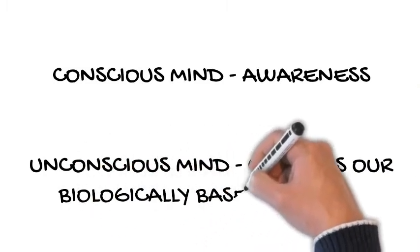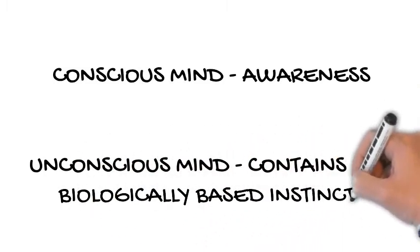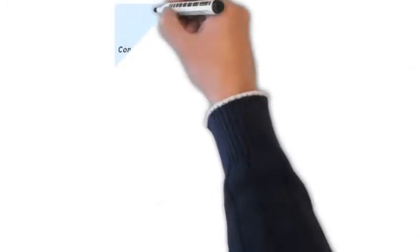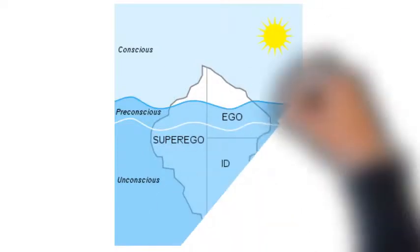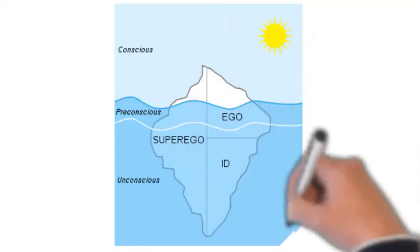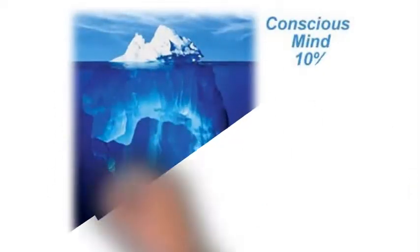You can imagine the conscious and unconscious mind as an iceberg. The conscious mind is much smaller, it's the tip of the iceberg that is above the water, that's our awareness.